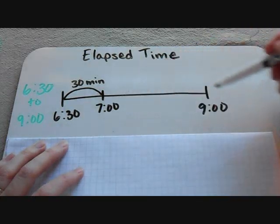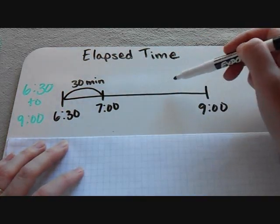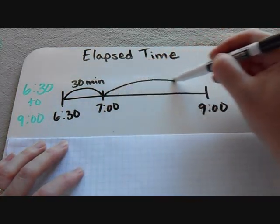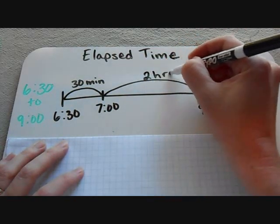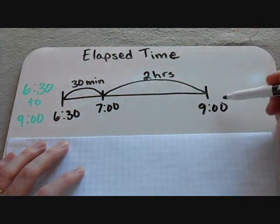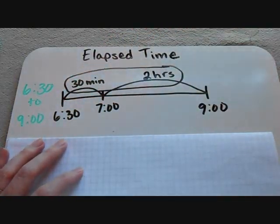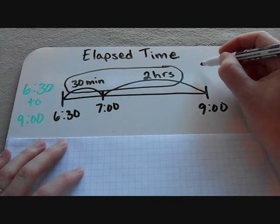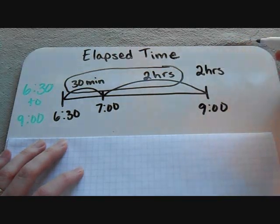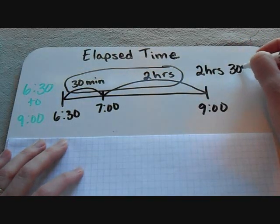And then from 7 o'clock to 9 o'clock, I can either make two jumps, or I can make one large jump to show that two hours have passed between 7 and 9 o'clock. Then it's really easy just to take all of my time that I've labeled up there at the top and see that my elapsed time is 2 hours and 30 minutes.